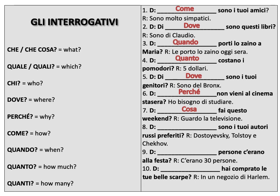Numero otto. Blank sono i tuoi autori russi preferiti? — Dostoevsky, Tolstoy e Chekhov. Blank are your favorite Russian authors — the answer is Dostoevsky, Tolstoy and Chekhov. By the way, three very good writers if anyone's looking for reading material during this quarantine. So we're asking which authors. How do you say 'which'? Quale — but notice that here it is autori, plural. The singular is autore, the plural is autori. So we need the plural form: quali. Quali sono i tuoi autori russi preferiti?